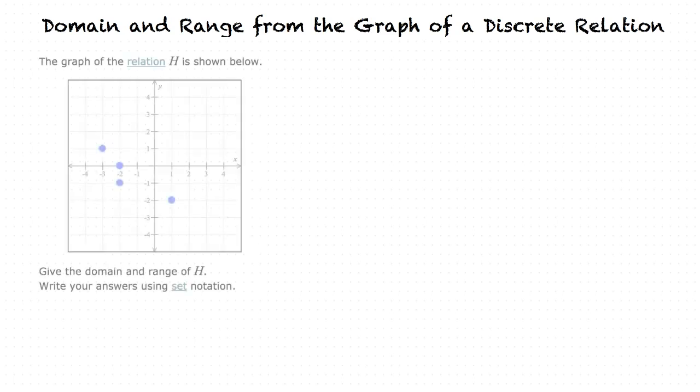This video will cover the topic of domain and range from the graph of a discrete relation. Let's take a look at the example below. What's a relation? A relation is a set of ordered pairs. From the graph, we see that h is given by the following set of ordered pairs.